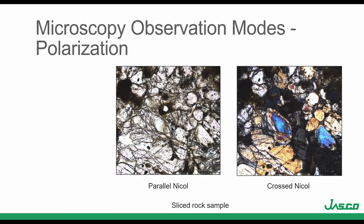Another observation mode is polarization. The light gets polarized, and if the sample can be polarized, we observe different phases. In this example, this is a thin rock sample, which is a very common application for geological samples using the polarized mode. In the image we cannot see any different phases at first, but when we apply polarization at 90 degrees, a different phase can appear, allowing measurement in those different areas.